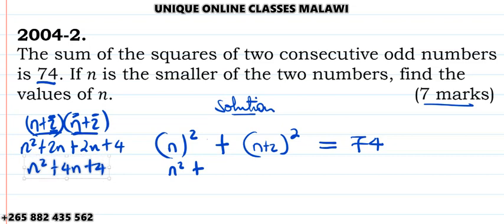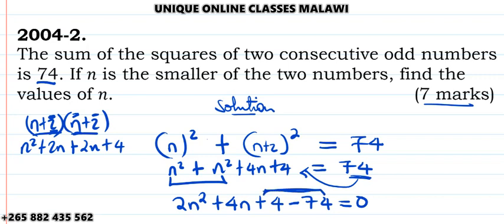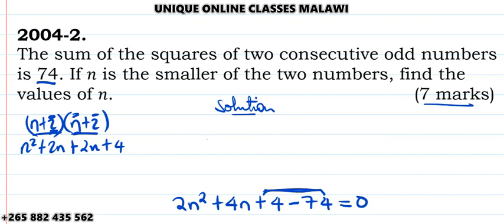If we expand (n+2)², we're going to have n×n, which is n², then plus 2n, plus 2n again, then 2×2 which is 4. Combine like terms together: n² + n² is 2n², plus 4n, plus 4.